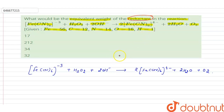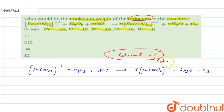First, what is the reductant? The reductant is a reducing agent. A reducing agent is the element which gets oxidized itself and reduces another element — that is, loss of electrons takes place.